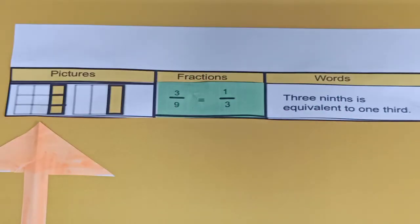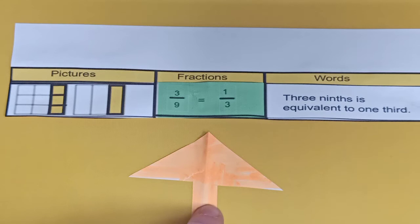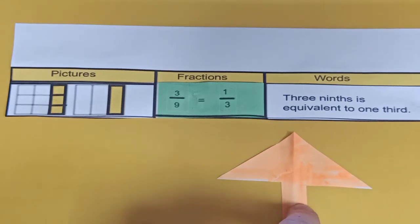Okay, we're going to look at some more equivalent fractions. We have a rectangle on the left side, and it's divided into 9 equal pieces, and 3 of them are highlighted. So that's 3 ninths. And if we look at this rectangle here, it's divided into 3 equal pieces, and 1 is highlighted. So that's 1 third. And in fractions, that's 3 ninths is equal or equivalent to 1 third. And thinking about it in words, 3 ninths is equivalent to 1 third.